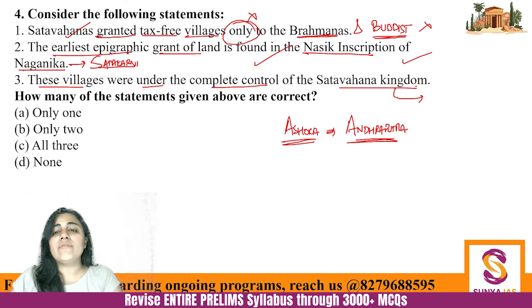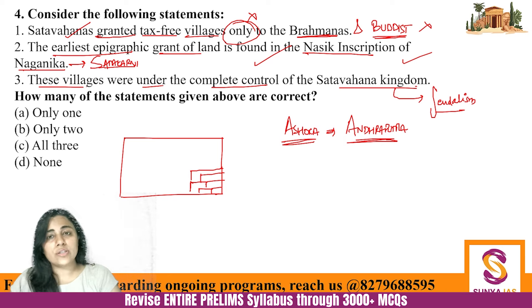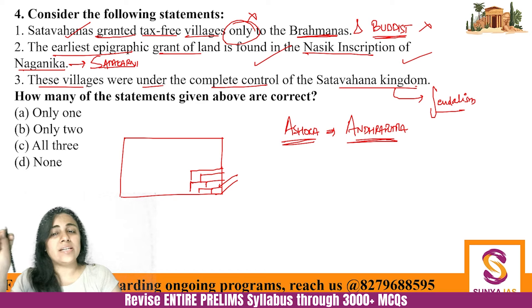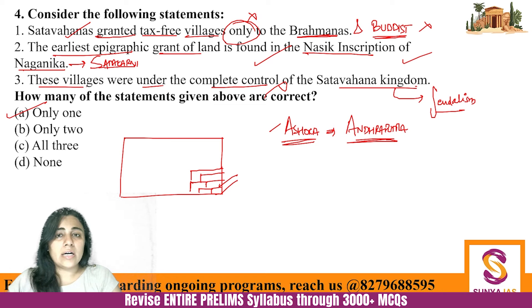Statement three is also incorrect. As more and more land was granted, those villages became independent small kingdoms — paying lip service to the Satavahanas but otherwise self-governing. This is when feudalism started. The centralization seen during the Mauryas was absent during the Satavahanas. So only statement two is correct. When studying Satavahanas we will also cover the Nasik inscription, also called the Nanighat inscription.